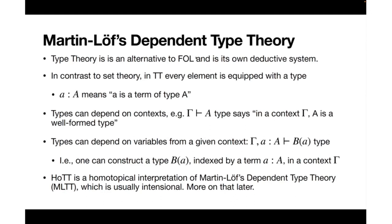The main idea behind dependent type theory is that we can form dependent types. One can informally understand a dependent type as a type that varies across or over a base type. For example, in a context Γ, we have a type A and a dependent type B(a), and the value of B will depend on the term from the base type.